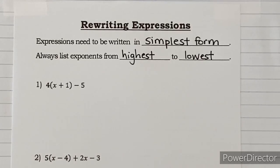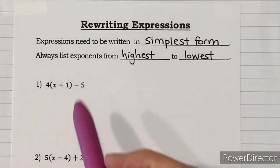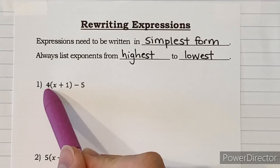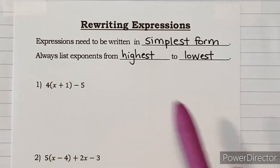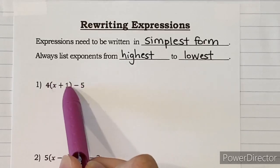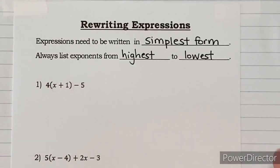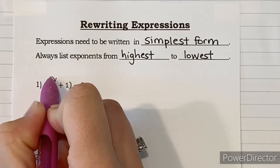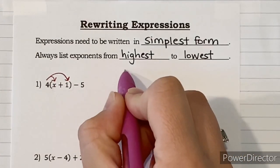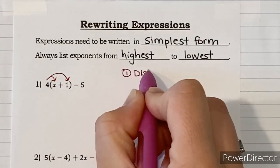Let's look at number one. We're going to write out the steps needed to simplify it as we go. The first thing we have to address, following order of operations (PEMDAS), is the parentheses. The only way to get rid of parentheses is to distribute whatever number is in front of them — in this case, a four. So step one is to distribute that four.